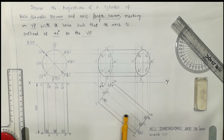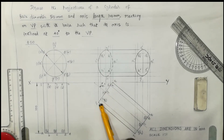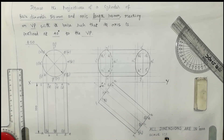Finally, write 'All dimensions are in mm' below your diagram, and note the scale followed is 1:1 — meaning the size given in the question is the same as drawn in the diagram, not increased or decreased. This is how the drawing appears when drawn on the drawing sheet. Practice well and get good marks. Thanks for listening.